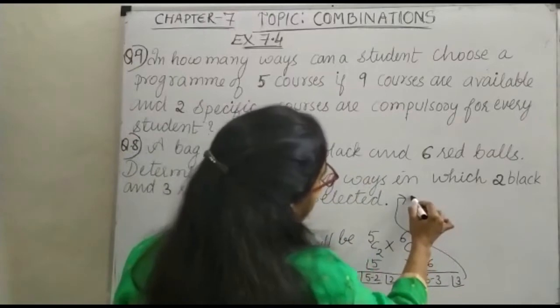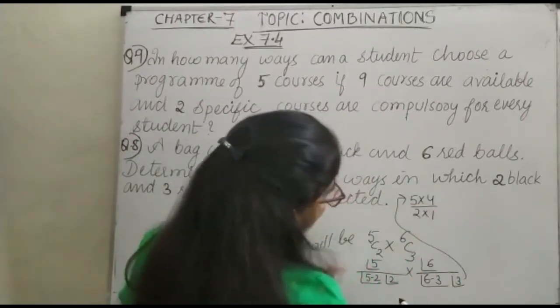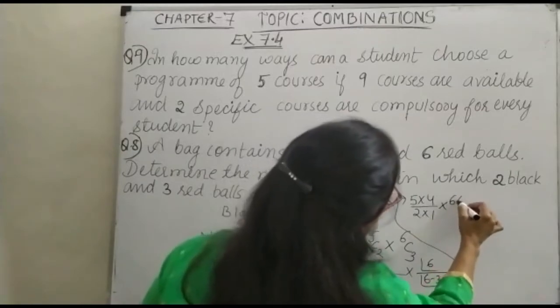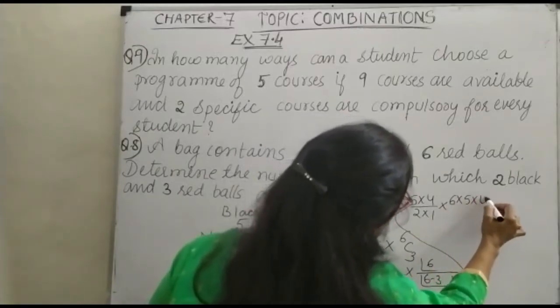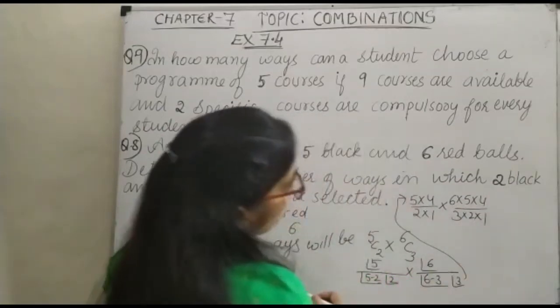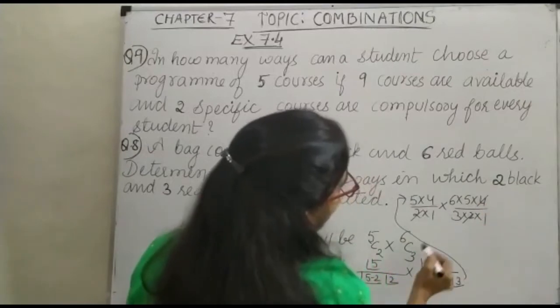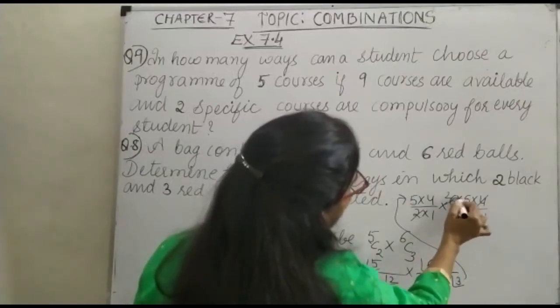5C2 can be written as 5 into 4, 2 into 1. 6C3: 6 into 5 into 4, that is 3 into 2 into 1. You can see here 2, 2 and this 4 will be cancelled. 3 ones are 3, 2s are... okay.